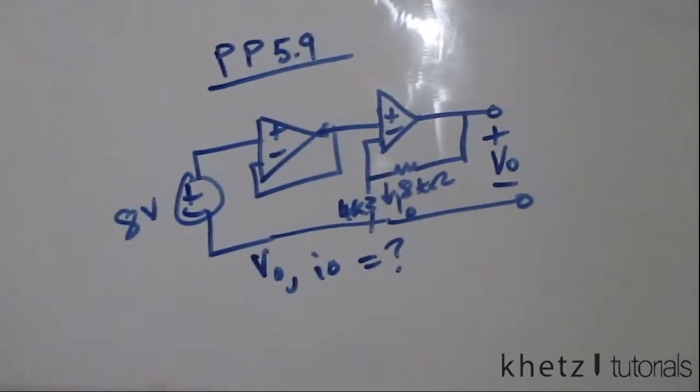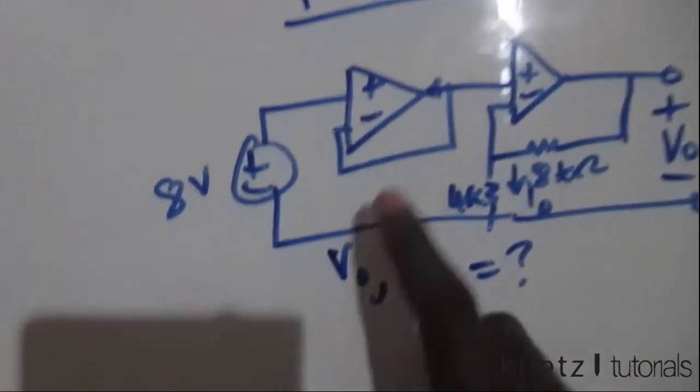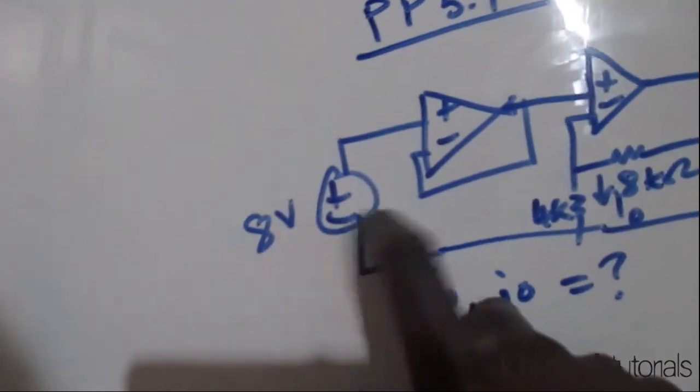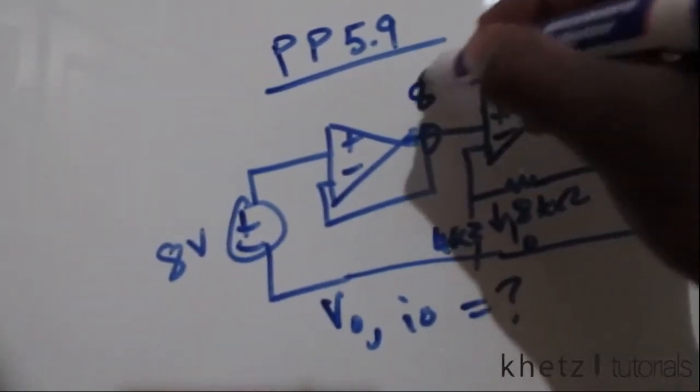On this circuit we're asked to find VO and IO. As you can see, the first op amp which we have here is a buffer, which means this voltage value will be taken directly to the output. So at this point we have 8 volts.